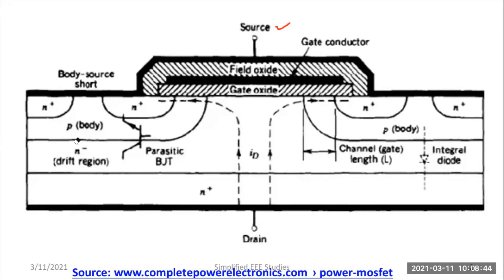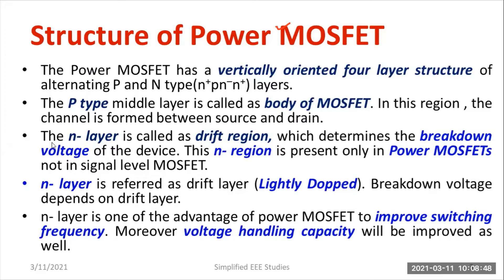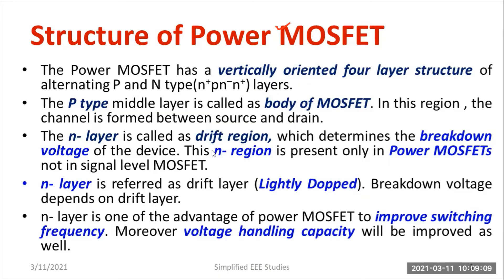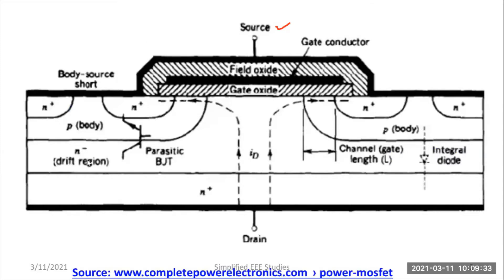Moving on to the next layer — the N minus layer. N minus layer is also called the drift layer. Let us point out where the N minus layer is. As you can observe, this is the N minus layer. The peculiarity of the drift layer is that it improves the voltage handling capability of the device — it determines the breakdown voltage of the power MOSFET. In the case of a signal level MOSFET, there is no N minus layer. That is the difference between power MOSFET and signal level MOSFET.